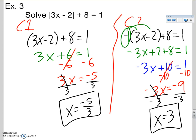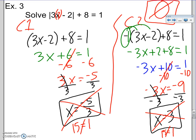My two answers, I gotta check both. If I plug negative 5 thirds inside, 3 times negative 5 over 3 is negative 5 minus 2 is negative 7. The absolute value of negative 7 is positive 7 plus 8 makes 15. My right side is 1. 15 is not the same as 1, so this answer fails. Any number inside the absolute value will always be positive, so I have a positive number plus 8 makes a number bigger than 8. Same thing with x equals 3, I get 15 which does not equal 1. So here I have no solution.